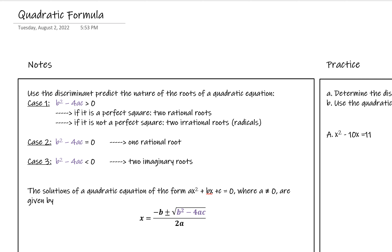Case two is when the inside of the square root is zero, and that means we're just going to have one answer. Because if you add or subtract zero — which is what's going on in the top of our expression — you're going to get the same thing, since adding or subtracting zero gives you the same result.